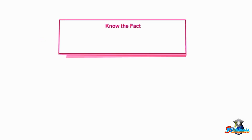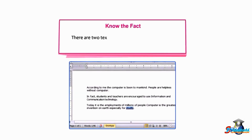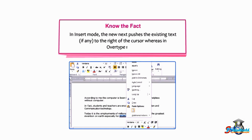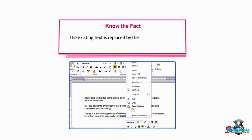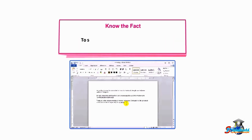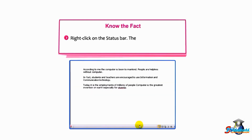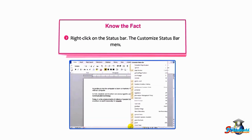There are two text entry modes in Word: Insert mode and Overtype mode. In Insert mode, the new text pushes the existing text to the right of the cursor. In Overtype mode, the existing text is replaced by the newly added text character by character. To switch between these modes, right click on the status bar — the Customize Status Bar menu appears.